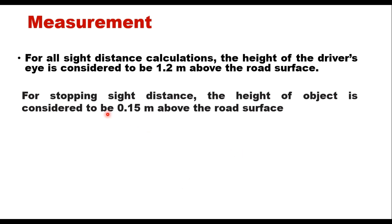For stopping sight distance, the height of the object is considered to be 0.15 meters — that is, 15 centimeters — above the road surface. So to define stopping sight distance: it is the distance up to which a driver, having their visual line 1.2 meters above the road surface, can see an object of height 0.15 meters on the road.